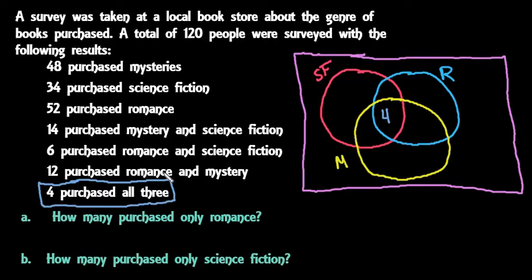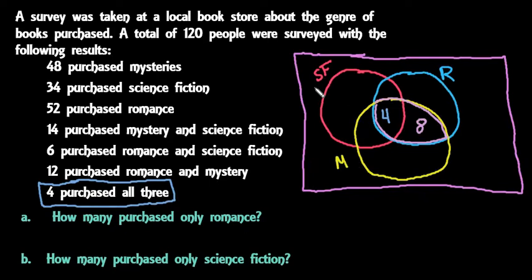12 purchased romance and mystery. Romance and mystery is this overlap of those two circles, so we need a total of 12 inside there. We already have 4, so 12 minus 4 tells us that 8 purchased romance and mystery but not science fiction. This entire overlap of romance and mystery totals 12 — 4 plus 8.